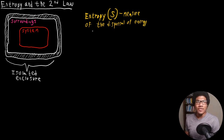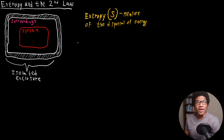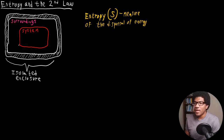As energy is transferred, there's going to be some sort of change in this measure of entropy. We'll give a thermodynamic definition for entropy in just a second. But right now, just think of entropy as the measure of the dispersal of energy. Let's say that we have our surroundings and system enclosure — a system defined in an isolated enclosure.